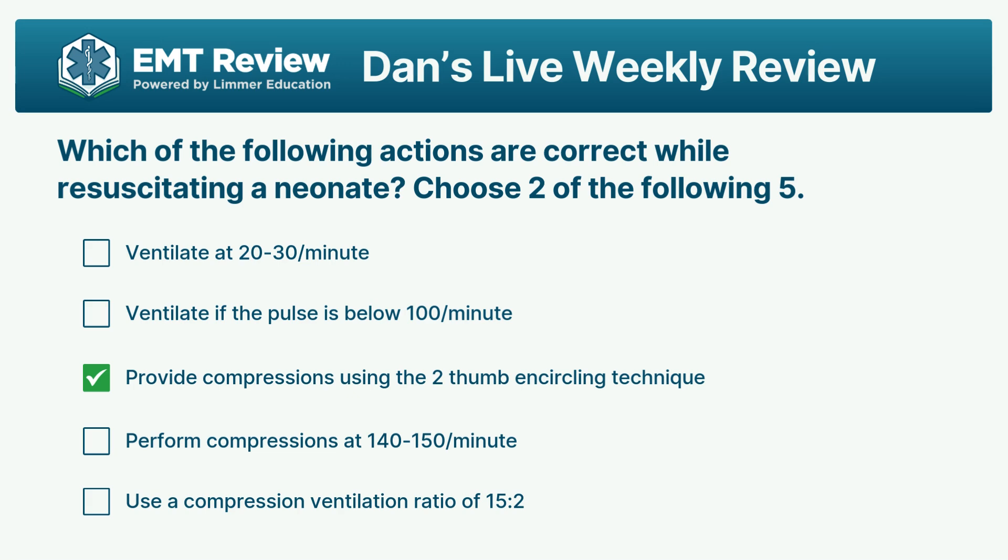The other correct answer is ventilate if the pulse is below 100 per minute. We do compressions if the pulse is below 60 a minute — good things to remember. We ventilate at 40 to 60 a minute, and we provide compressions at the same rate as an adult, child, and infant: 100 to 120 per minute.